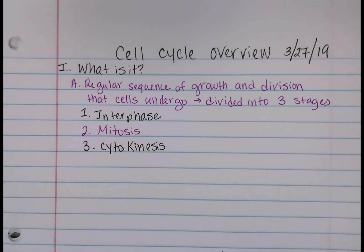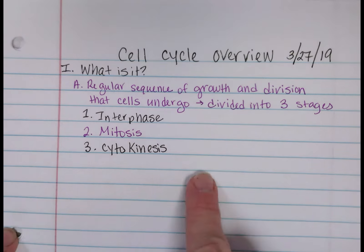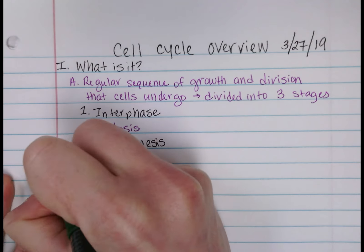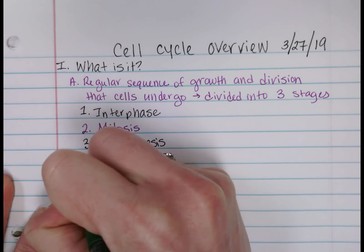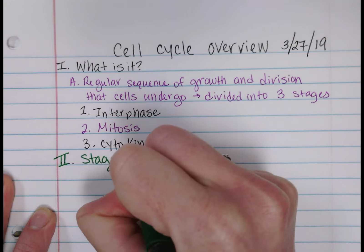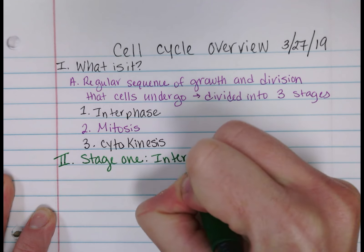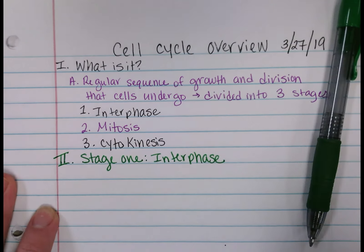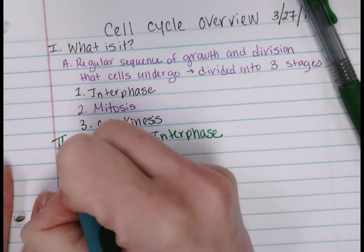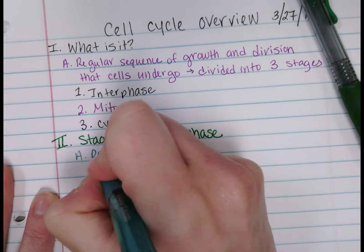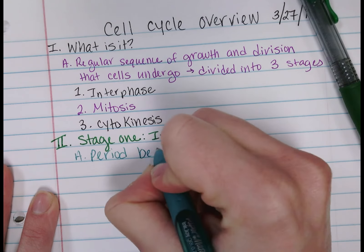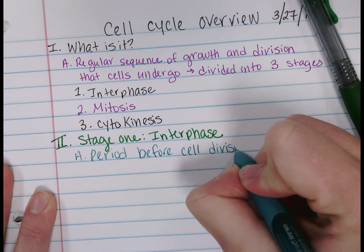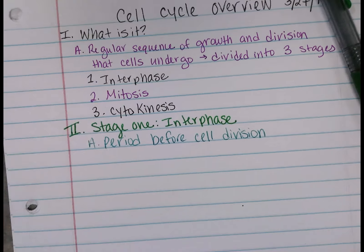So the cell cycle is a regular sequence of growth and division that all cells undergo. The three stages are interphase, mitosis, and cytokinesis. Now the next section we're going to look at is specifically stage one, which is interphase. Interphase is actually a period — before cell division — so the cell has not divided yet, it's just kind of a preparation stage.